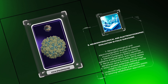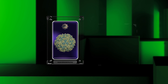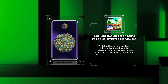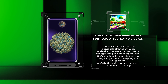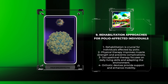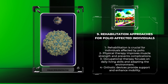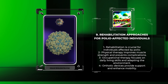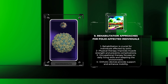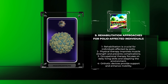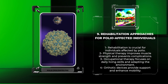We will now focus on rehabilitation approaches for polio survivors. Rehabilitation is crucial for individuals affected by polio. A multidisciplinary team creates personalized treatment plans, including physical therapy to improve muscle strength and prevent complications. Occupational therapy focuses on daily living skills and adapting the environment. Orthotic devices provide support and enhance mobility. Pain management is essential, and addressing psychosocial and emotional needs is vital. This comprehensive approach offers holistic care for patients.